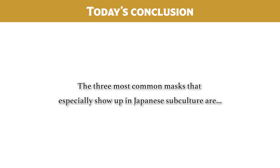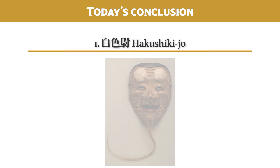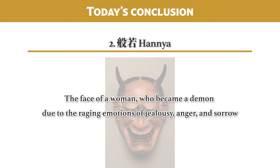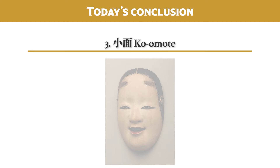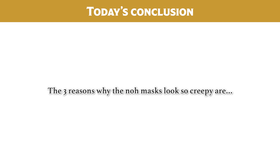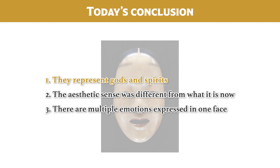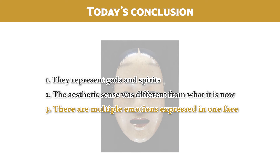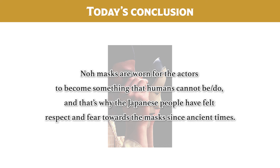The three most common masks that especially show up in Japanese subculture are: Hakushikijo, an old god that appreciates the peace and tranquility of the land; Hanya, the face of a woman who became a demon due to the raging emotions of jealousy, anger, and sorrow; and Komote, the face of a young beautiful woman such as female spirits, goddesses, and celestial beings. The three reasons why the no-masks look so creepy are: they represent gods and spirits; the aesthetic sense was different from what it is now; and there are multiple emotions expressed in one face. When no-masks are worn by the actors, they become something that humans cannot be or do, and that's why the Japanese people have felt respect and fear towards the masks since ancient times.